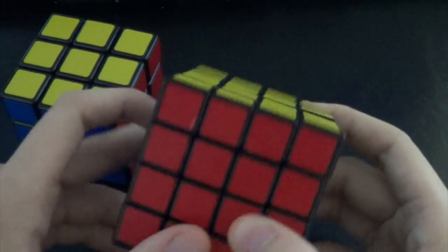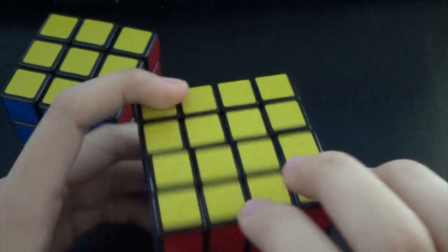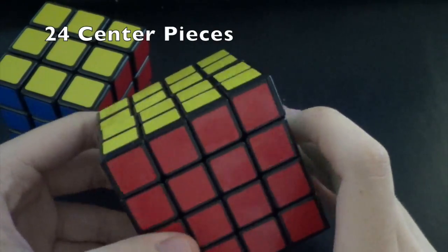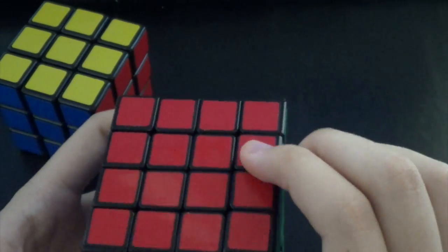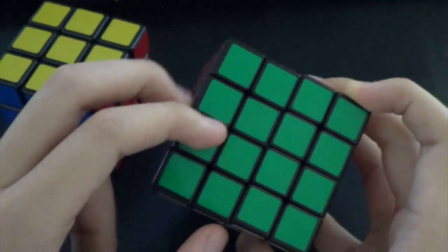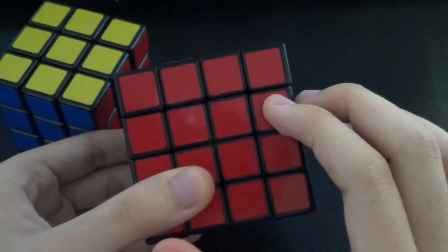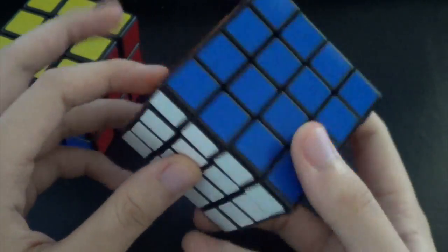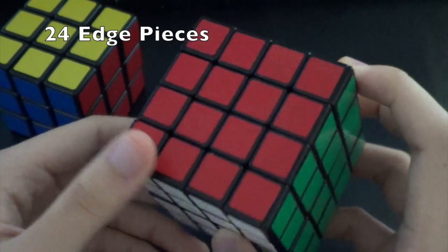And so we have 4 pieces making up the centers, which means 4 on each of the 6 faces, and that makes 24 center pieces. And then we have 2 edge pairs on each edge side, and so that makes 2 per edge, and 12 edges total, which makes another 24 edges.